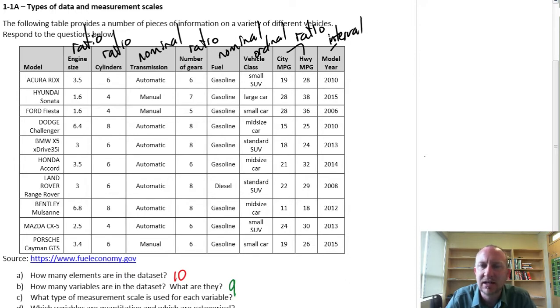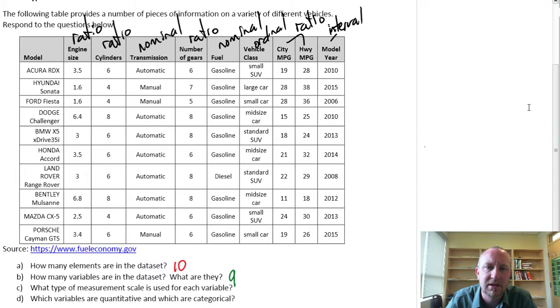Part C, we went through the more challenging task of describing the measurement scale and defining what those different measurement scales are. And having done so, that will actually make part D a little bit easier to deal with when we consider whether or not variables are quantitative or categorical in nature.